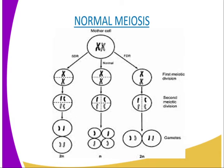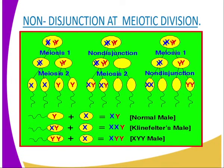Briefly, Klinefelter syndrome individuals have an extra sex chromosome, hence they have a total of 47 chromosomes in their cells. Remember, a normal human being has 46 chromosomes, but in the case of Klinefelter's, they have an extra chromosome, making the total 47. As you can see in our diagram, the normal male has XY, but a Klinefelter's male has an XXY chromosome — there is an extra chromosome.